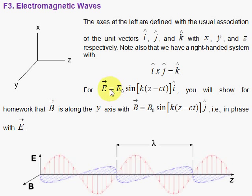So we have an electric field chosen in the X direction, I hat, and this is propagating down the Z axis. Now you will show for homework that E is perpendicular to the direction of propagation.